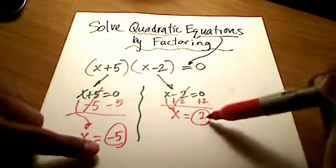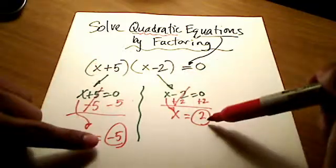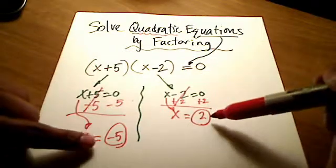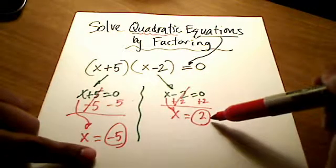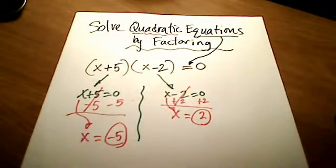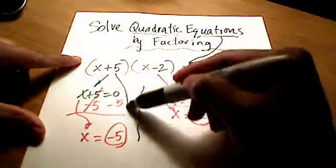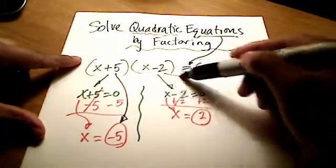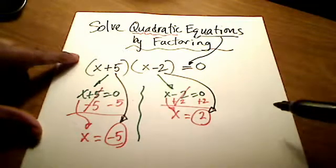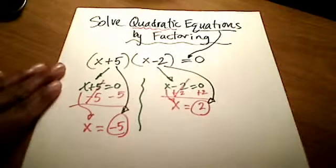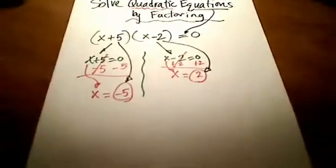So it turns out that these two parentheses yield us two answers. And do you notice a shortcut that we might be able to use to go from x plus 5 and x minus 2 into answers of x equals negative 5 and x equals positive 2? Yeah, you can probably see that pretty easily, that really we're just changing the signs. We're just changing the signs of that positive 5 into a negative 5, and that negative 2 into a positive 2. So keep that in mind.